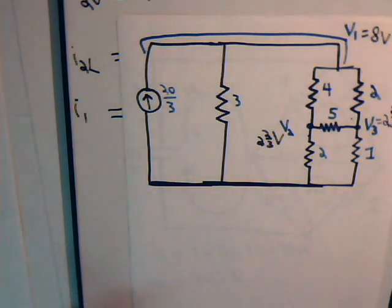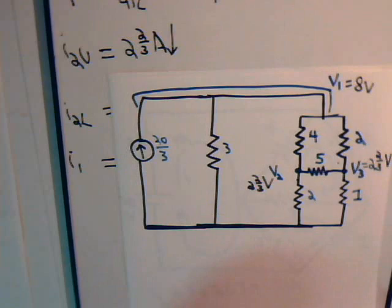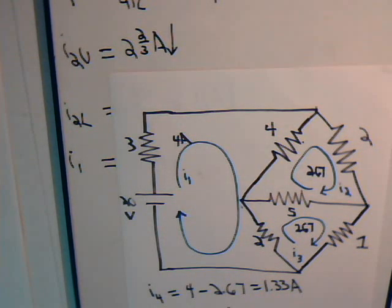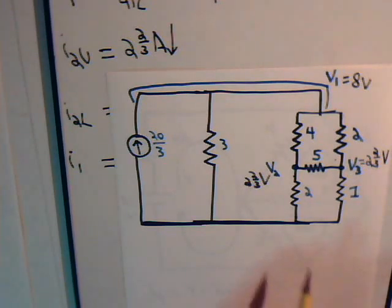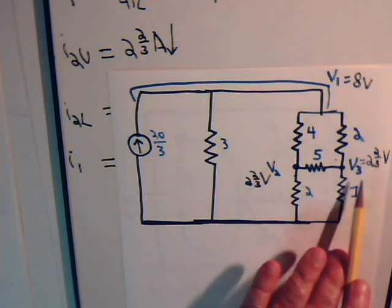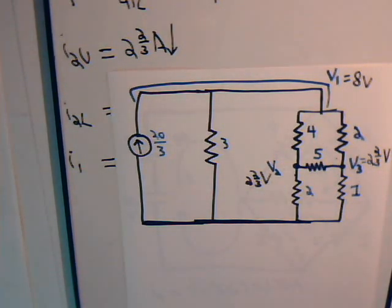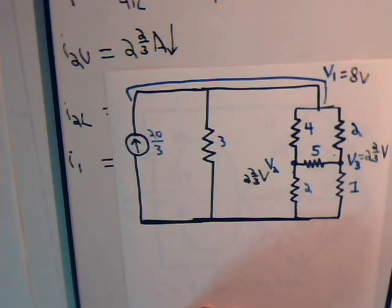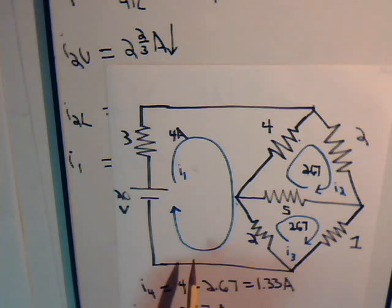In the last video we looked at analyzing this circuit using nodal analysis. We chose this particular problem because we had already solved this circuit before in an equivalent form using mesh current analysis. From the last video we determined the three node voltages V1, V2, and V3, and also the current through these resistors. Now we want to compare these answers to what was obtained using the mesh current analysis approach.